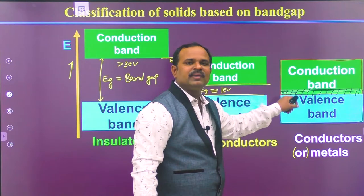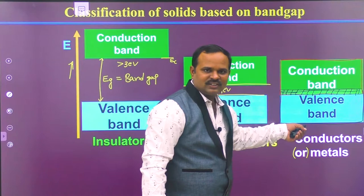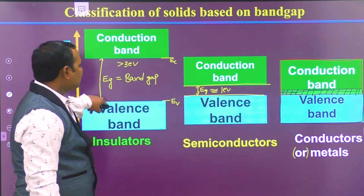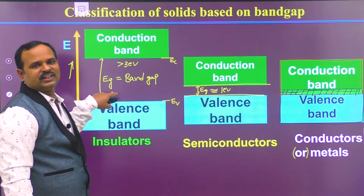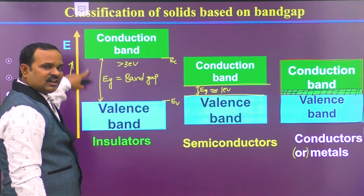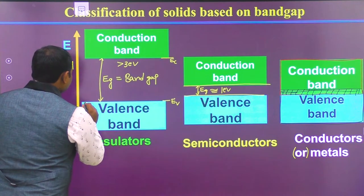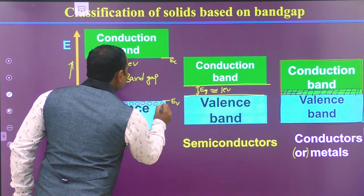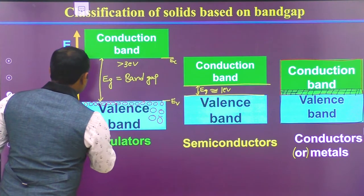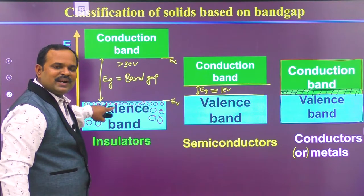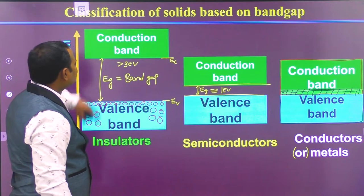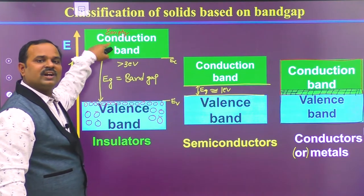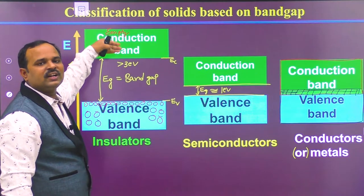That means if there is no band gap in materials, they are conductors or metals. If a small band gap exists, they are semiconductors. If the band gap is too large, they are insulators. Since the band gap is of the order of 3 electron volts in insulators, the valence band is completely filled with electrons and the conduction band is completely empty. That is the reason why there are no electrons to conduct in the conduction band, so there is no conductivity for this kind of material.